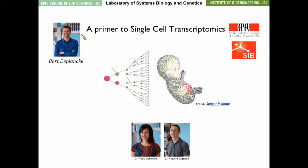Bart grew up in Belgium where he studied biochemical engineering at the University of Ghent. In 2002 he got his PhD in immunobiology at the University of Illinois at Urbana-Champaign. He then did a first postdoc jointly at the Department of Cancer Biology at Dana-Farber Cancer Institute and the Department of Genetics at Harvard Medical School in Boston, Massachusetts. In 2003 he did a second postdoc at the University of Massachusetts Medical School in Worcester, and in 2007 he moved back to Europe to become assistant professor at the Institute of Bioengineering, School of Life Science at the EPFL. Since 2014 he is an associate professor.